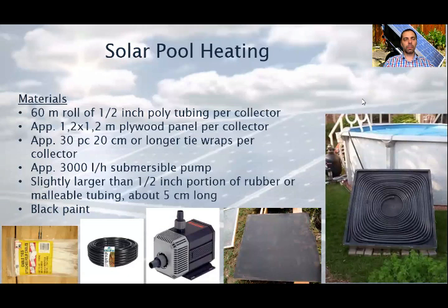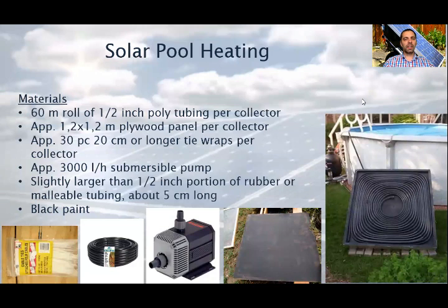Here you see the required materials. You need approximately 60 meters of half-inch poly tubing. As the base, approximately 1.2 by 1.2 meters of plywood panel. Approximately 30 pieces of 20 centimeter or longer tie wraps. Approximately a 3000 liter per hour submersible pump, or simply use the original pump which runs the cleaner. In case you want to place the collector on the roof, you will need a bigger pump. For connecting the tubes, a slightly larger than half-inch portion of rubber or malleable tubing, about 5 centimeters long, and black paint.